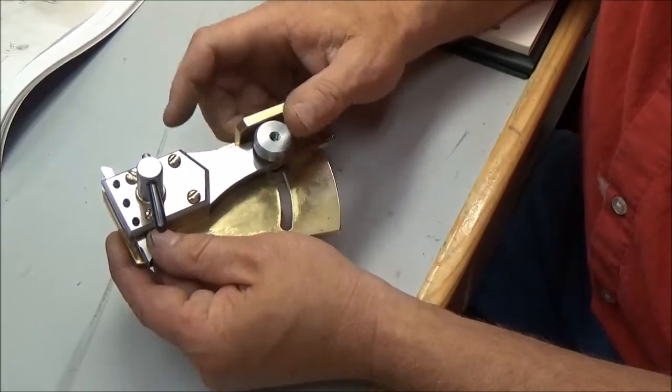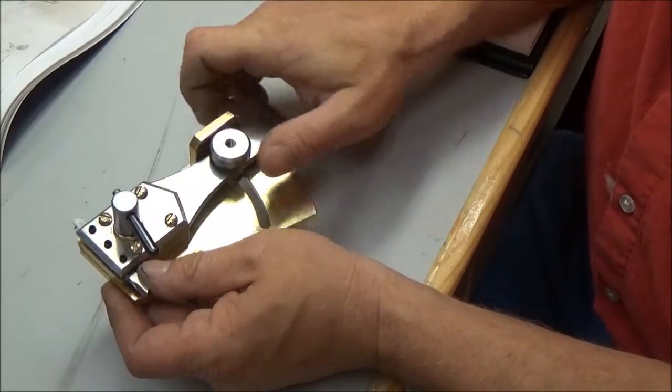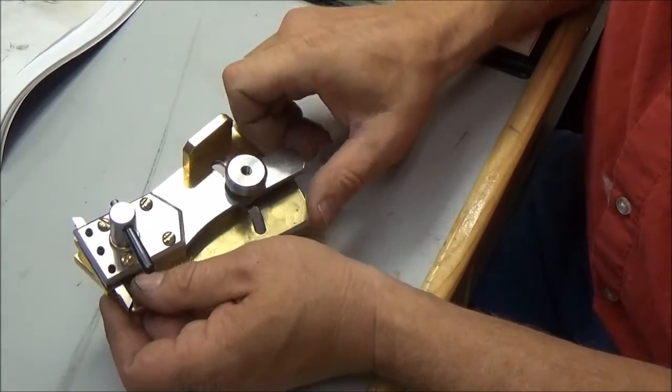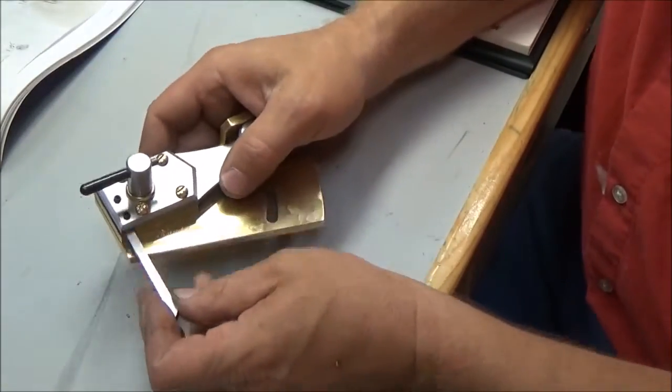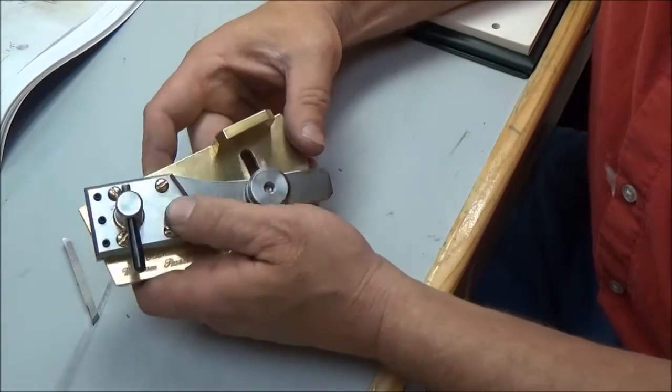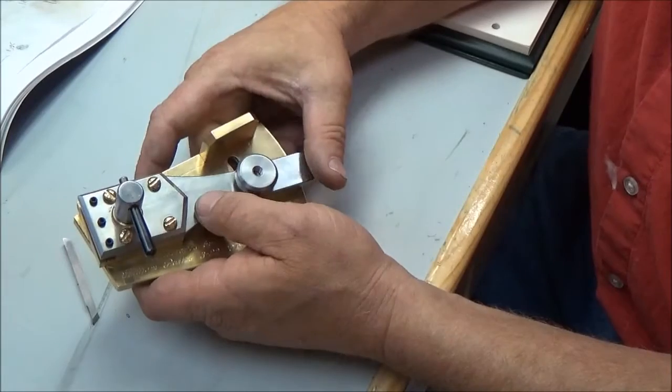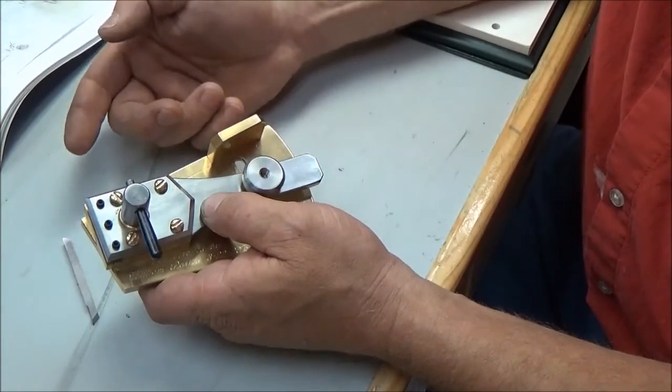So basically this is a tool holder plus a sine bar and I'll show you how that actually works. What we're looking for is a specific angle when we're making these cutters which is going to give us our radial flank angle.